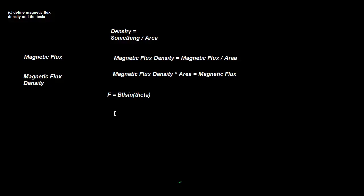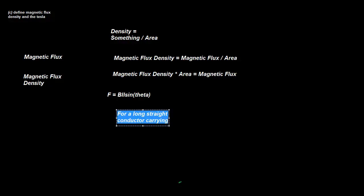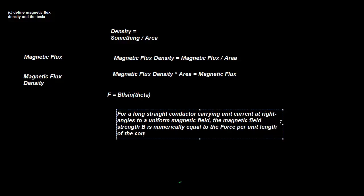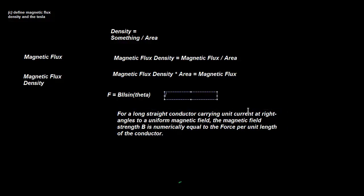So let's go and define magnetic flux density first. For a long straight conductor carrying unit current at right angles to a uniform magnetic field, the magnetic field strength B is numerically equal to the force per unit length of the conductor. And this is when we rearrange the equation F = BIL sinθ. B equals F over IL sinθ. This is for a long straight conductor carrying a unit current — so we're making I equal one — so just kind of ignore it. And at right angles, so that is making sinθ equal one. And basically you get B equals F over L, which is basically saying magnetic field is defined as force per unit length, but only under these two conditions.